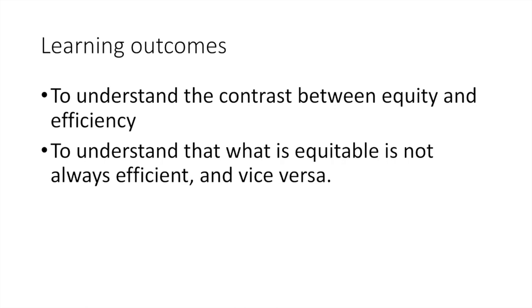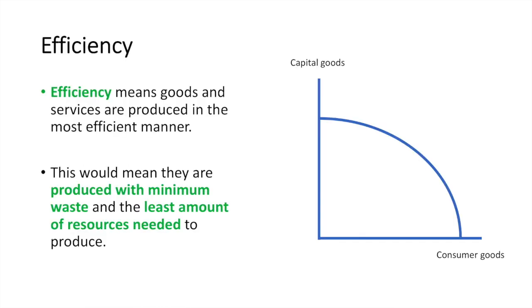In this video, we will look at the contrast between equity and efficiency as we try to understand that what is equitable is not always efficient and vice versa. The word efficiency comes up frequently in economics discussions. One definition of efficiency is that goods and services are produced in the most efficient manner, meaning they are produced with minimum waste and the least amount of resources needed to produce.